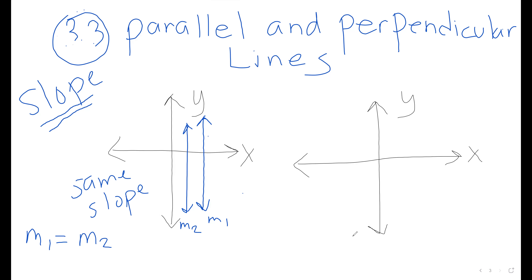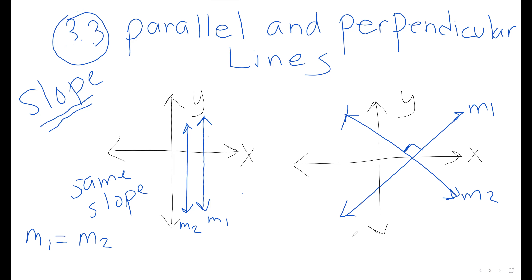Perpendicular lines form a 90-degree angle. Lines are perpendicular when you multiply their slopes together and the result equals negative 1 — meaning they are negative reciprocals of each other. So parallel lines have the same slope, and perpendicular lines have slopes whose product equals negative 1.